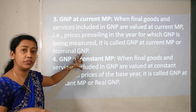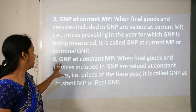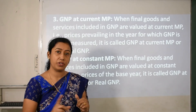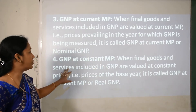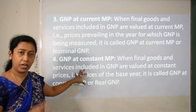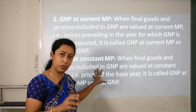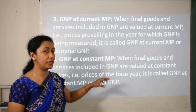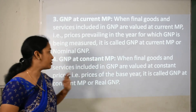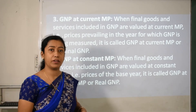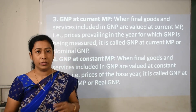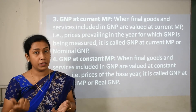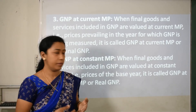GNP at current price is also called nominal gross national product. GNP at constant market price means that the final goods and services included in GNP are valued at constant prices — that is, the prices of the base year. This is also called real GNP or real gross national product. Whenever we calculate at constant price it is always termed as real.